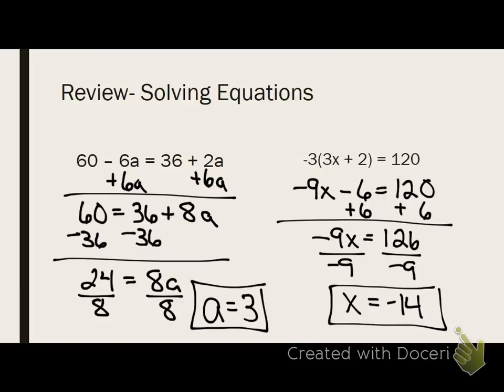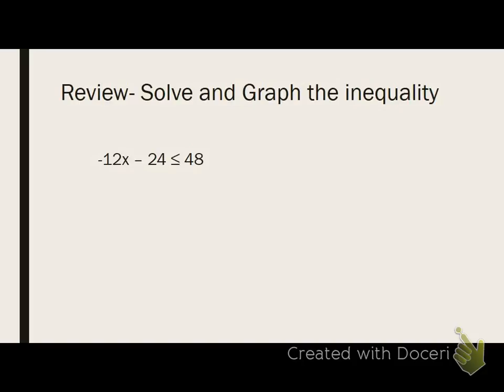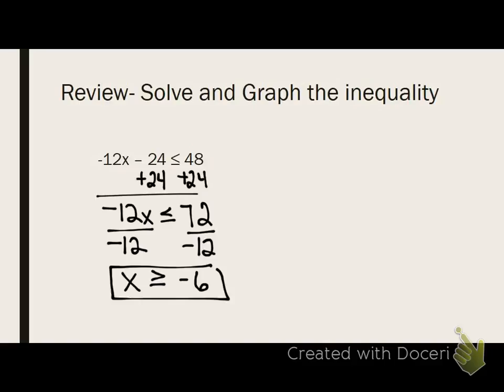Last question that you're going to see on your test tomorrow, aside from the bonus, would be the inequality. Solving graph. Don't forget to graph it on a number line. Okay. What do you do first? You add 24 to both sides. Now you've got negative 12x is less than or equal to 72. What do you do to both sides? Divide by negative 12. And what happens to your inequality? You've got to flip it because you divided by a negative to solve. You have to reverse your inequality.